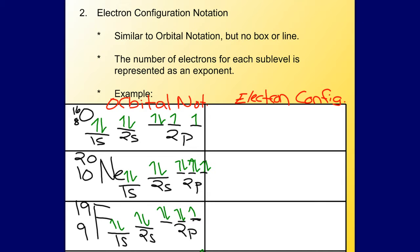Basically, electron configurations are shorthand of orbital notations. The number of electrons for each sublevel is going to be represented as an exponent, so you will see that here. So electron configurations, again you're going to take your orbital notation as 1s, and it has 2 electrons in it, so I represent that as an exponent, 2.